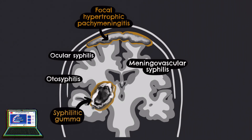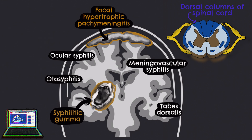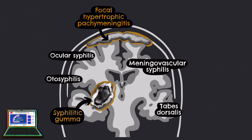Last but not least, we have tabes dorsalis, a late-stage neurosyphilis condition affecting the spinal cord, more specifically the dorsal columns. It results from damage to these dorsal columns due to T. pallidum infection. It can also result in ataxia, loss of coordination, sharp pain, Charcot joints, hyporeflexia, and Argyll Robertson pupils, due to slow degeneration of nerve cells and fibres.